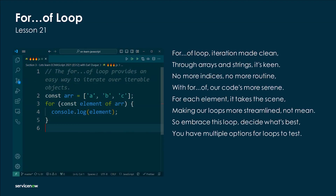The for...of loop — iteration made clean, through arrays and strings it's keen. No more indices, no more routine; with for...of our code's more serene. For each element it takes the scene, making our loops more streamlined. So embrace this loop and decide what's best — you have multiple options for loops to test.